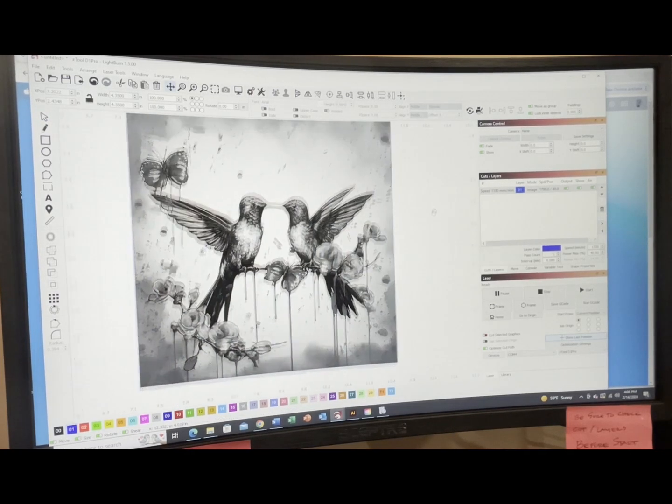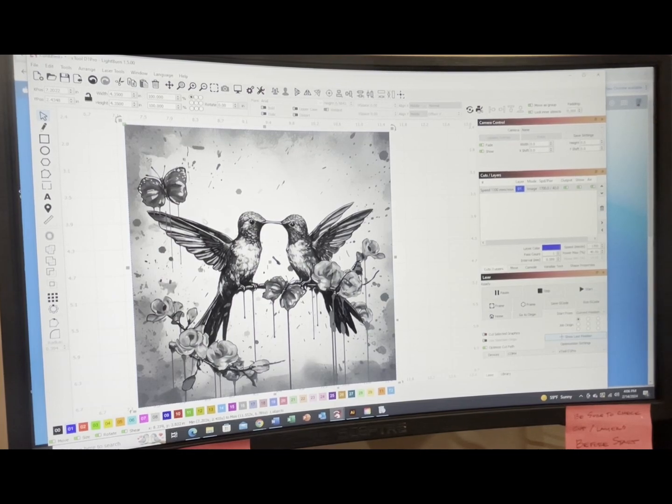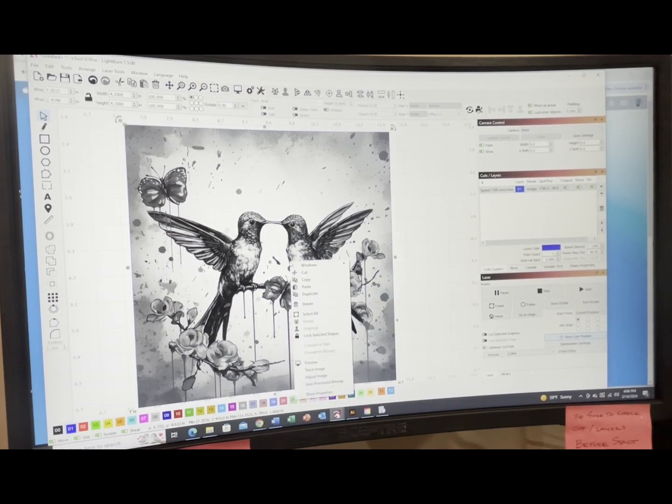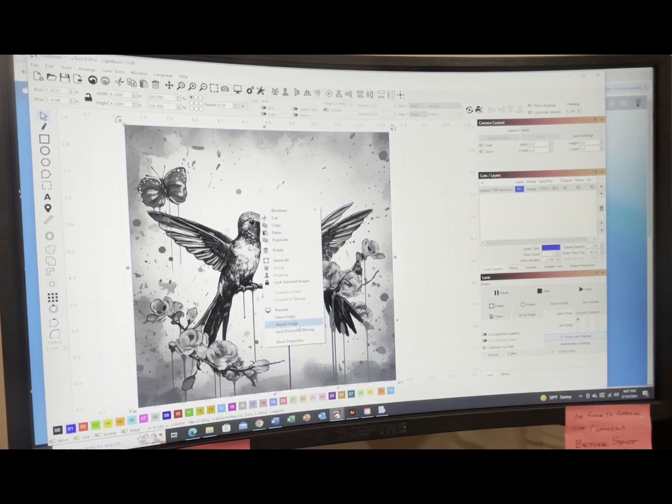Now if I want to come in here and make any changes to this, I can click the arrow, make sure I've got the image selected - you can see the marching ants around it - and then I will right click on my mouse and come down here to adjust image.